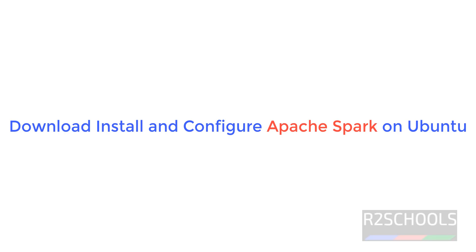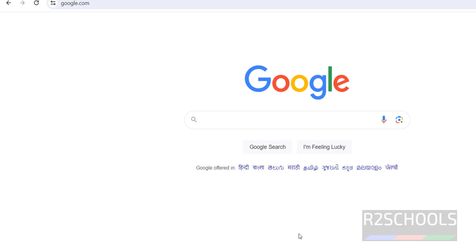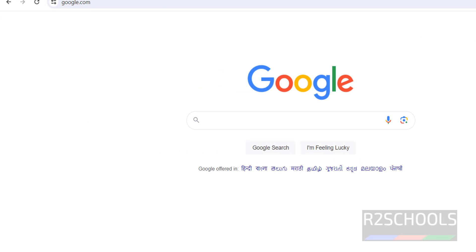Hello guys, in this video we will see how to download, install and configure Apache Spark latest version on Ubuntu operating system. The operating system I am using is Ubuntu 22.04. The process is the same for all Ubuntu versions. Let's connect to the Ubuntu machine.